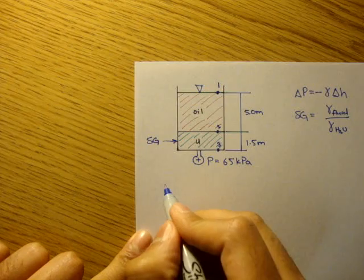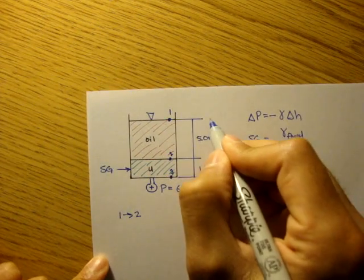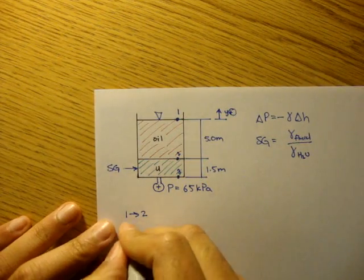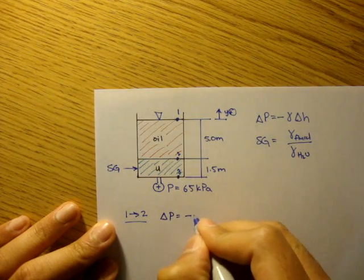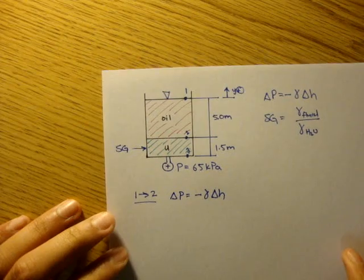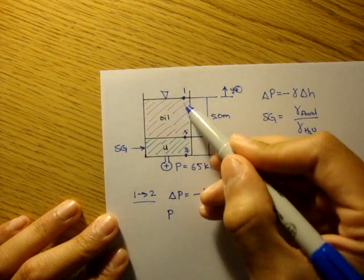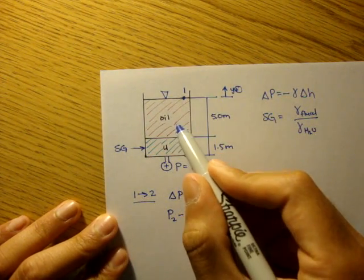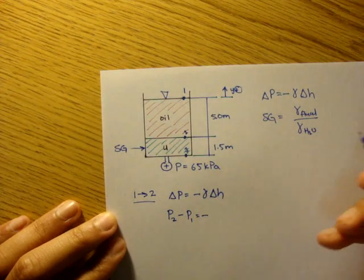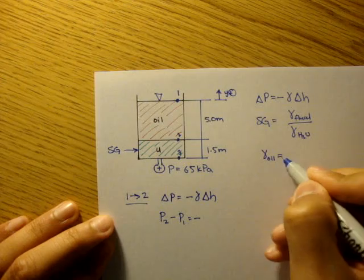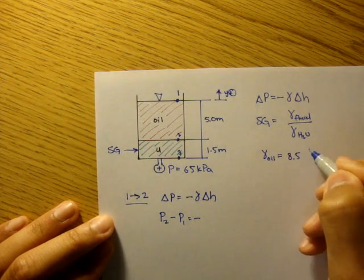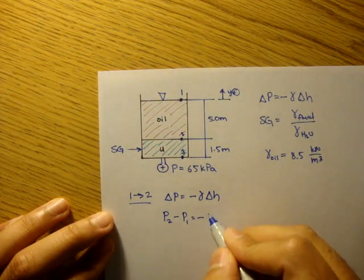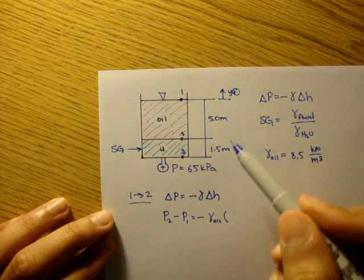From point one to point two, let's set our datum here. That's like our zero. Delta P equals negative gamma delta H. Now the change in height—if this was our zero, point two would be at negative five meters.